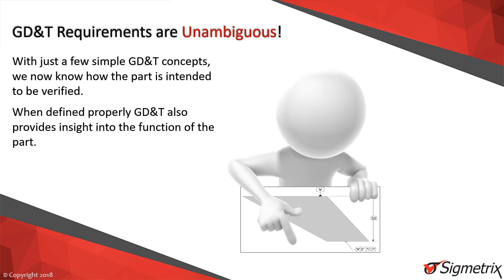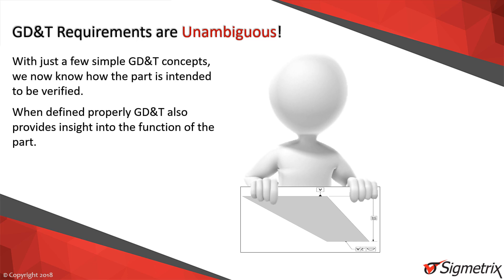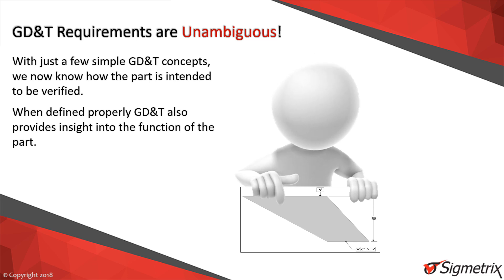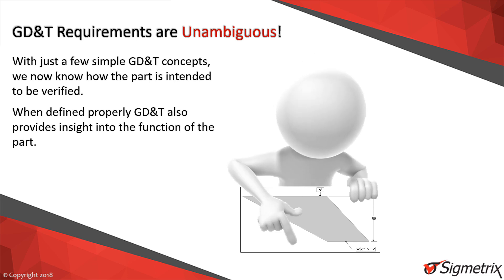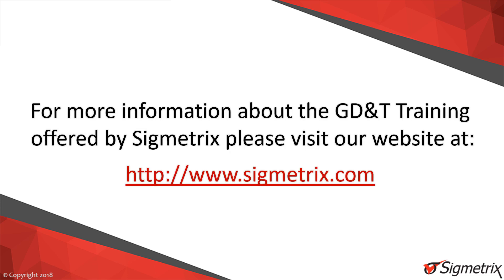Now everyone measuring the part against the drawing must do so in the same way, using datum feature A to establish both the origin and direction of the measurement. GD&T thus removes the ambiguity and helps achieve measurement consistency, while also helping the reader of the print to have a better understanding of how the part is used in the assembly, assuming it's been applied correctly. To learn more about how GD&T can help clarify your design requirements, please visit our website. Thank you.